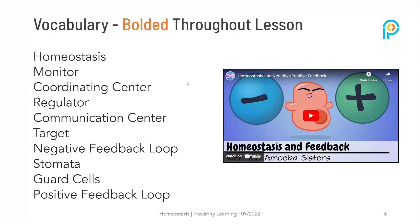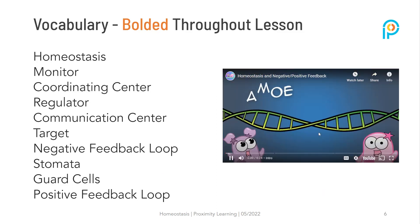Vocabulary words: homeostasis, monitor, coordinating center, regulator, communication center, target, negative feedback loop, stomata, guard cells, and positive feedback loop. We're going to start out with an Amoeba Sisters video.